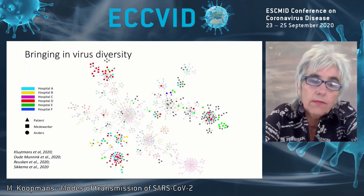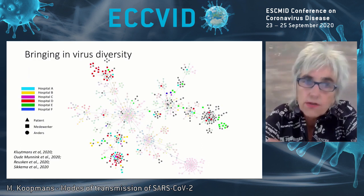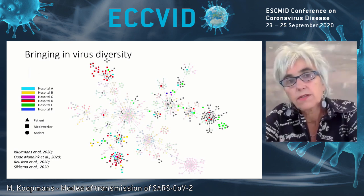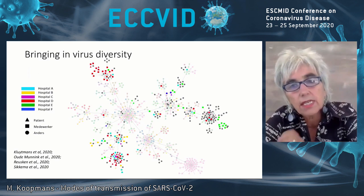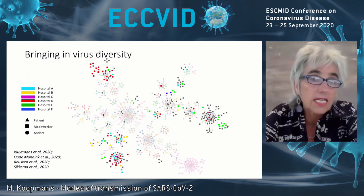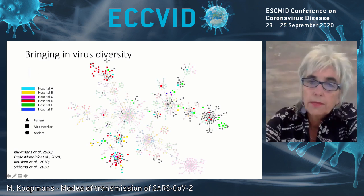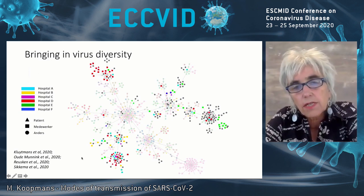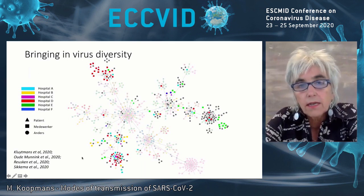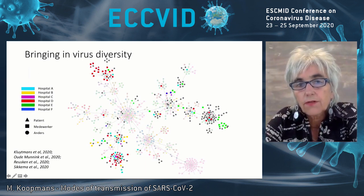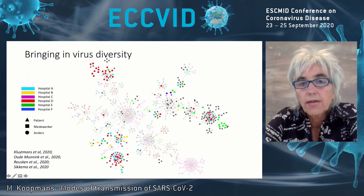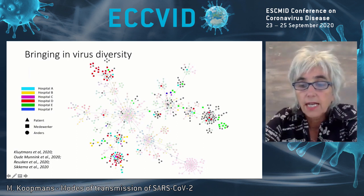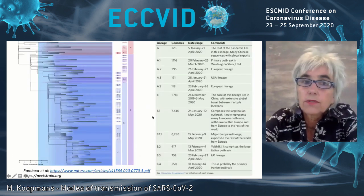Moving on to the third question: bringing in virus diversity. Even though as a coronavirus this virus is not evolving very rapidly because of a proofreading mechanism, the virus is diversifying. Here is an image from a minimal spanning tree produced at the start of the first wave in our country, where you see the virus from Wuhan. But already in early March, you could already recognize multiple slightly different clusters of viruses, and of course this has continued to occur with its global dispersal.